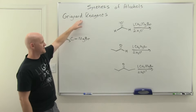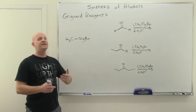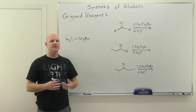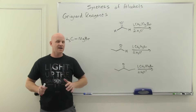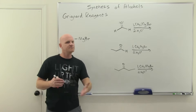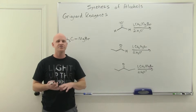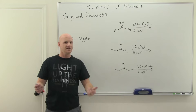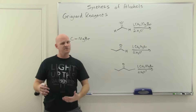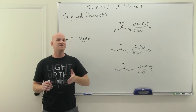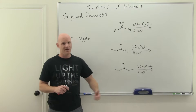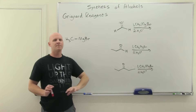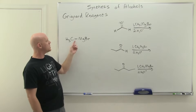A Grignard reagent is simply an organometallic — where carbon is actually bonded to a metal, which is not normal. Normally we think of carbon as bonded to non-metals. In organic molecules, the only atom typically bonded to carbon that's less electronegative than carbon is hydrogen. The Grignard reagent is highly reactive: carbon is bonded to a magnesium, making it an organomagnesium compound.